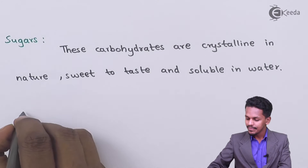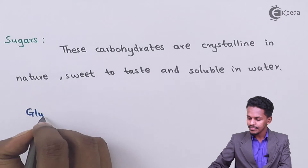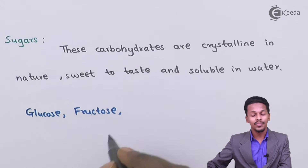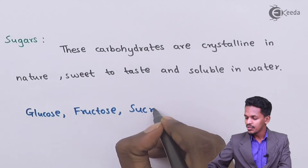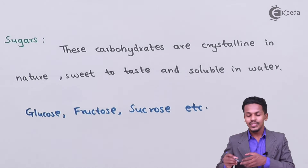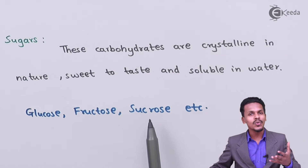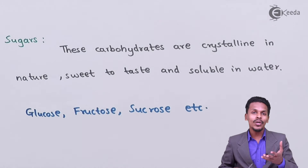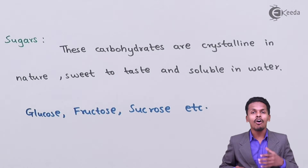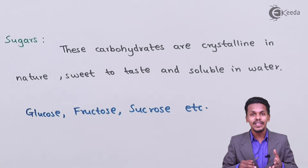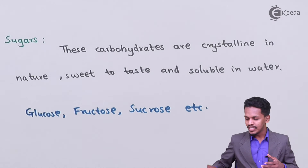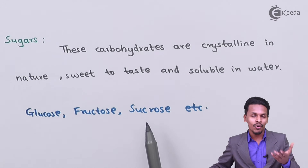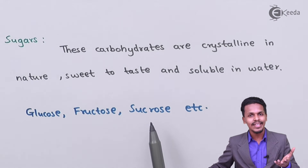For example, glucose, fructose, and sucrose are all known as sugars because they follow this nature. All monosaccharides and oligosaccharides are basically sugars. Glucose and fructose are monosaccharides, and sucrose is an oligosaccharide — it can also be called a disaccharide.